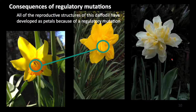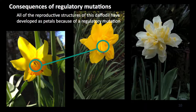Here are some daffodils with similar problems. Here's a normal daffodil — you can see the reproductive structures inside the horn part of the daffodil. Here's another kind of daffodil that you can grow in your garden. It doesn't have any reproductive structures at all — no pistils and no stamens. All those parts have developed as flowers.